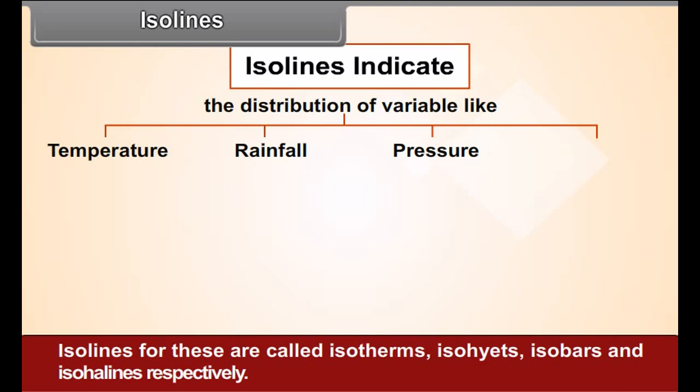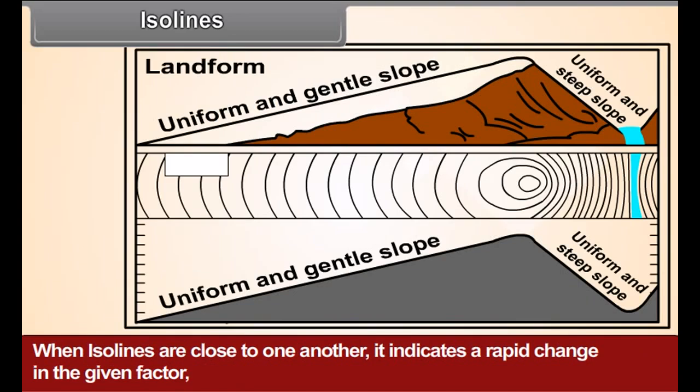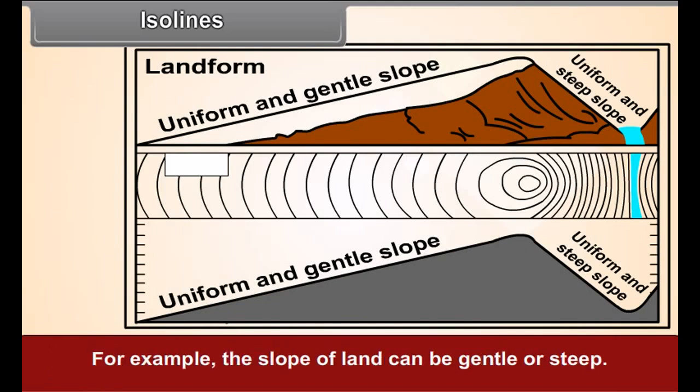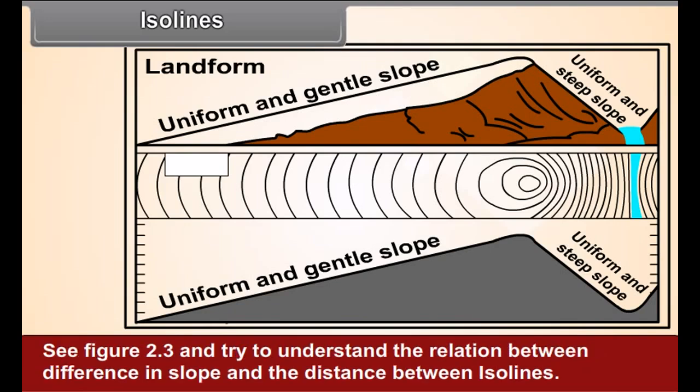and isohalines respectively. When isolines are close to one another, it indicates a rapid change in the given factor. When they are far away from one another, they indicate a slow change. For example, the slope of land can be gentle or steep. See figure 2.3 and try to understand the relation between difference in slope and the distances between isolines.